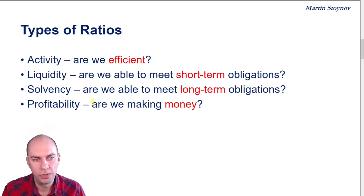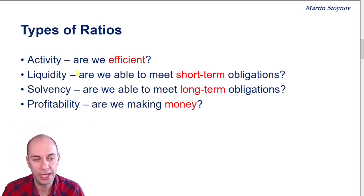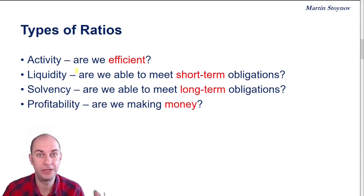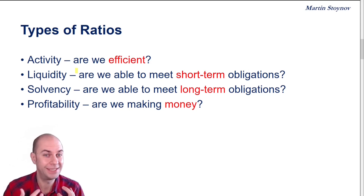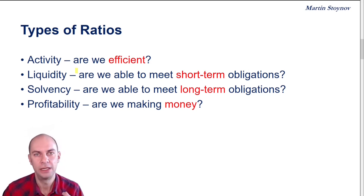In this reading, we need to look at four families of ratios: activity, liquidity, solvency, and profitability. On this slide, we're just going to look at a bird's eye view of what they are trying to achieve. I like to refer to the activity ratios as efficiency ratios. This family of ratios is going to tell me if I am an efficient operator — am I using my assets in the most productive and efficient way?